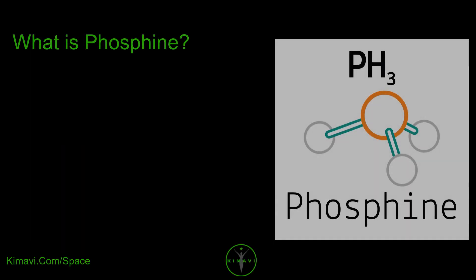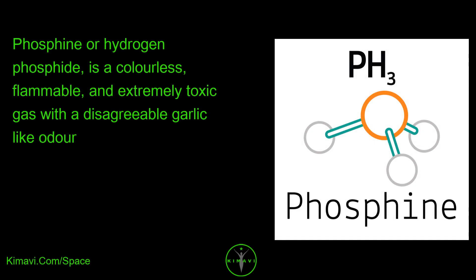What is Phosphine? Phosphine or hydrogen phosphide is a colorless, flammable, and extremely toxic gas with a disagreeable garlic-like odor.